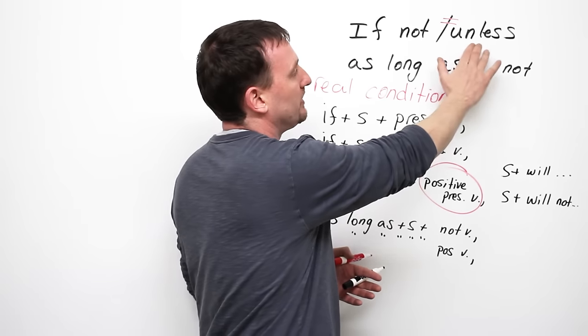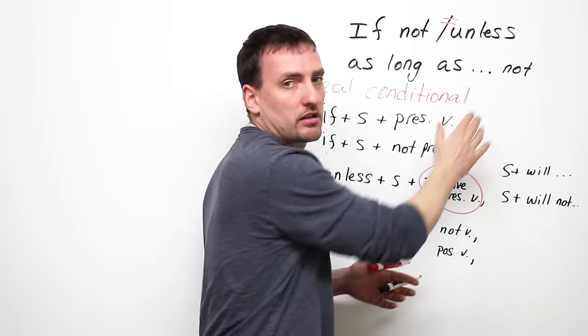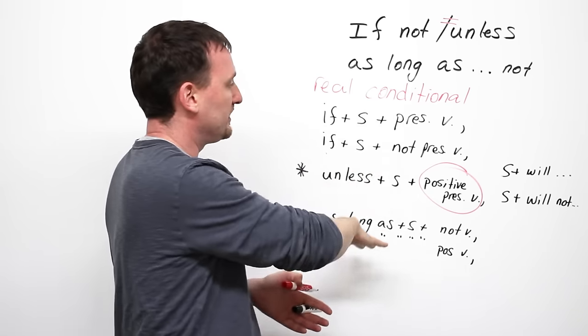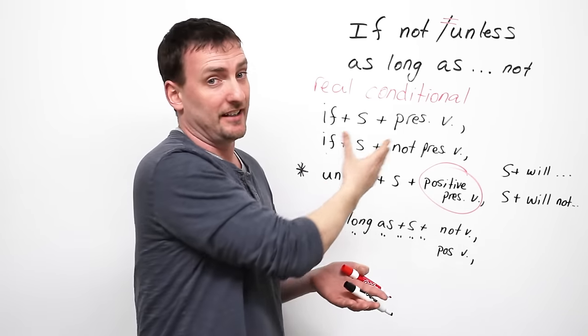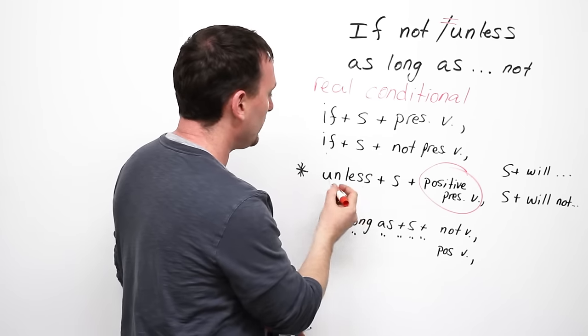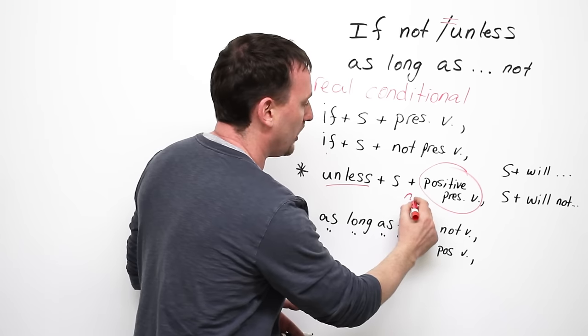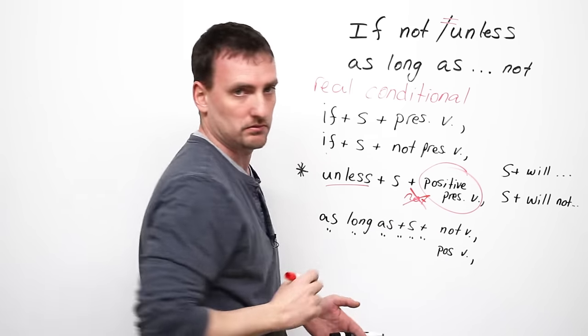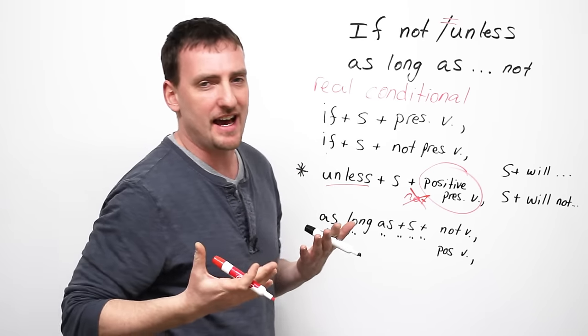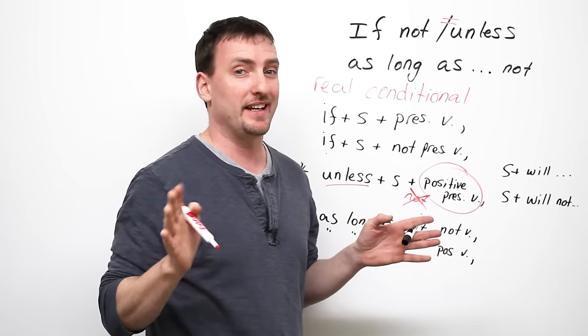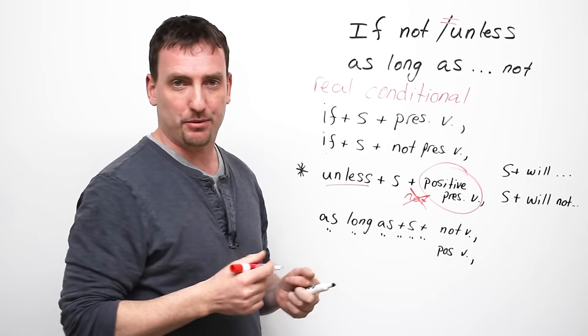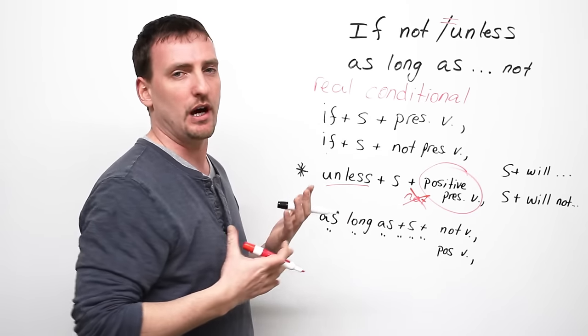So if not, unless, as long as not. Basically, all mean the same thing. You just have to remember how to structure it. And the structure is almost the same. What is the most important? Do not use unless with not. Then you have a double negative. And we all know from our English classes, beginner English classes, we don't like double negatives. Right? Okay, good. Let's look at some examples of actual sentences to see how all of this works.